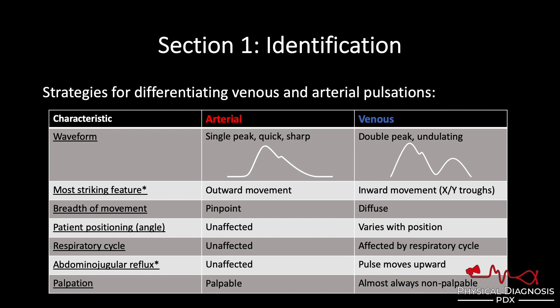In terms of patient position: imagine you've got a patient at 45 degrees and you see the venous pulse in the middle of their neck. If you recline them back to a more supine position, that pulse is going to climb up the neck anatomically. If you do the opposite and sit them up, it's going to move down the neck.